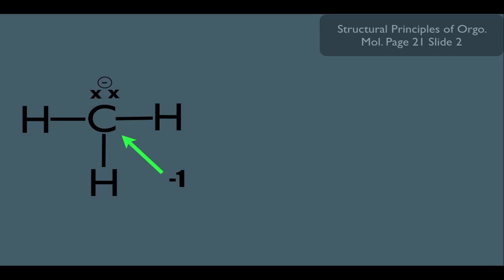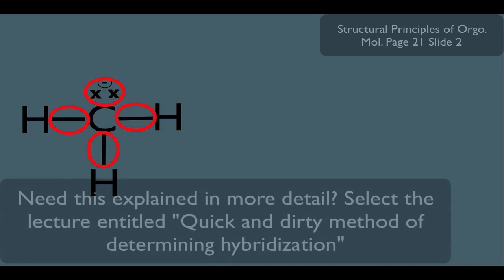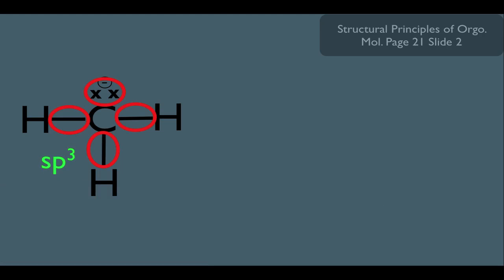The other thing we should notice here is that he has a steric number of 4, and in another online lecture we talked about having a steric number of 4 means that you are sp3 hybridized, which means these bond angles should be pretty close to 109.5 degrees.